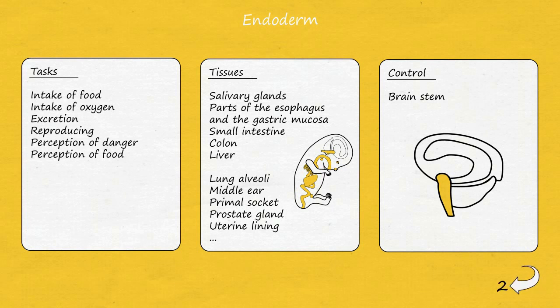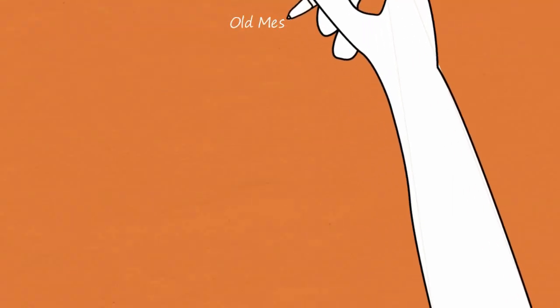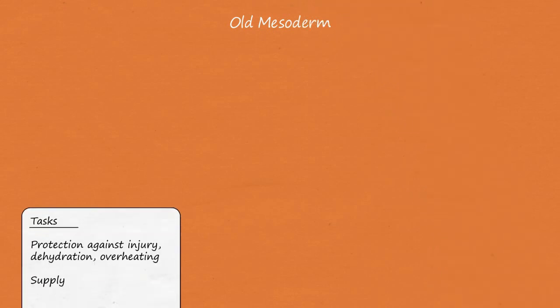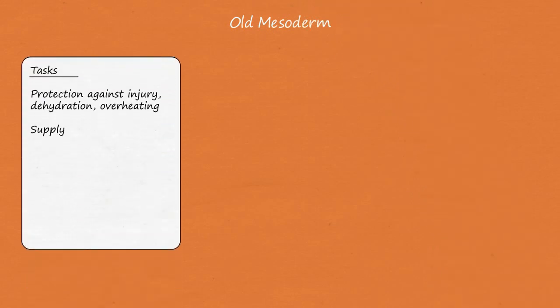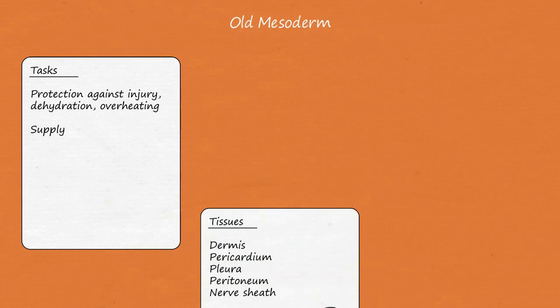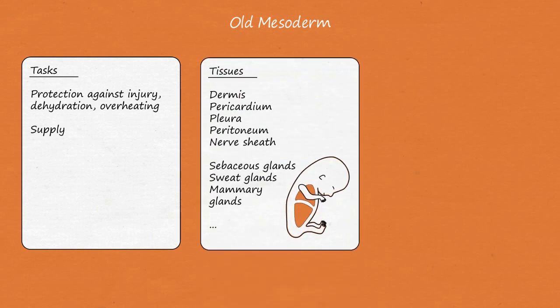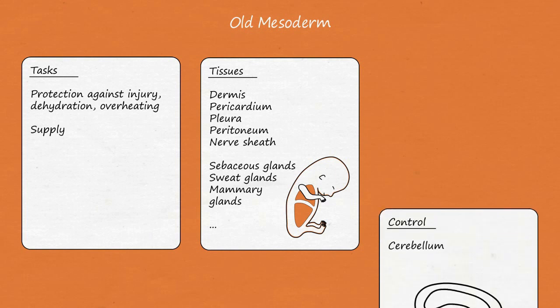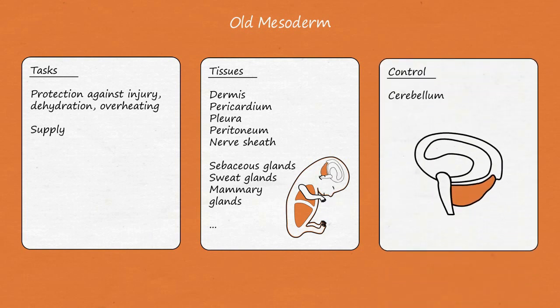Let's take a look at the old mesoderm next. All tissues resulting therefrom have protection and supply functions including, for example, various protective tissues such as the dermis, pericardium, pleura, and peritoneum, nerve sheaths, and sebaceous sweat and mammary glands. These tissues are controlled by the cerebellum.